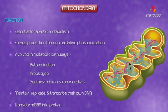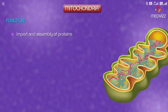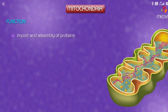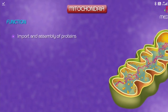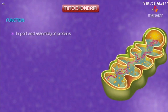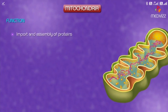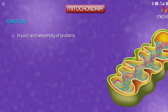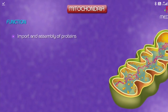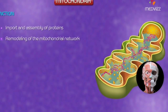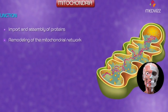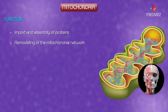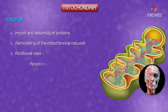The import and assembly of proteins is another important mitochondrial function, as most mitochondrial proteins are encoded by nuclear DNA and translated in the cytosol. The ongoing remodeling of the mitochondrial network is also a function of mitochondria.